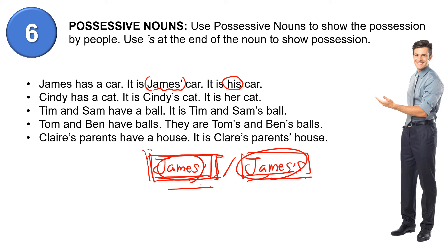Cindy has a cat — it is Cindy's cat, it is her cat. Tim and Sam have a ball — it is Tim and Sam's ball. That is the same ownership. Tom and Ben have balls — they are Tom's and Ben's balls. That is different ownership: there are two balls, one belongs to Tom and one belongs to Ben, so you say Tom's and Ben's balls.